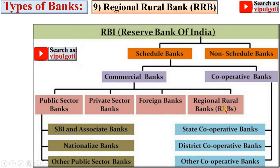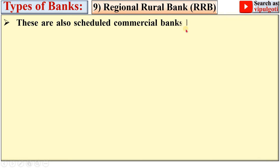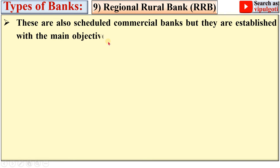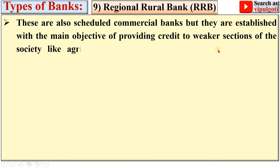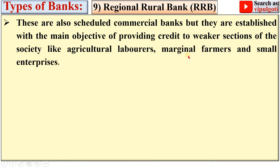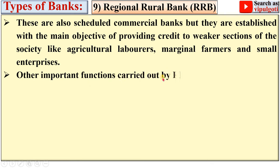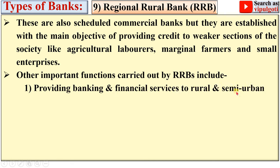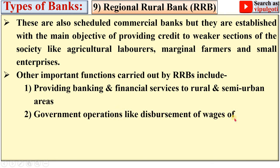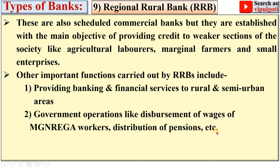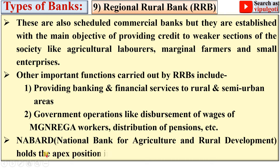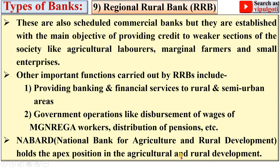Now Regional Rural Banks (RRBs). These are also scheduled commercial banks, but established with the main objective of providing credit to weaker sections of society like agricultural laborers, marginal farmers, and small enterprises. Other important functions include providing banking and financial services to rural and semi-urban areas, government operations like disbursement of wages to MGNREGA workers, and distribution of pensions. NABARD, that means National Bank for Agriculture and Rural Development, holds the apex position in Agriculture and Rural Development.